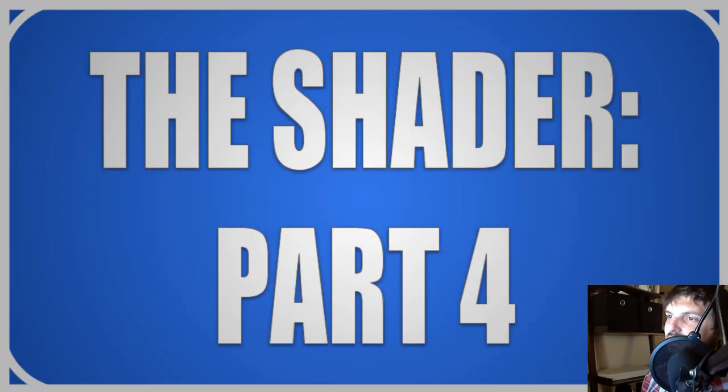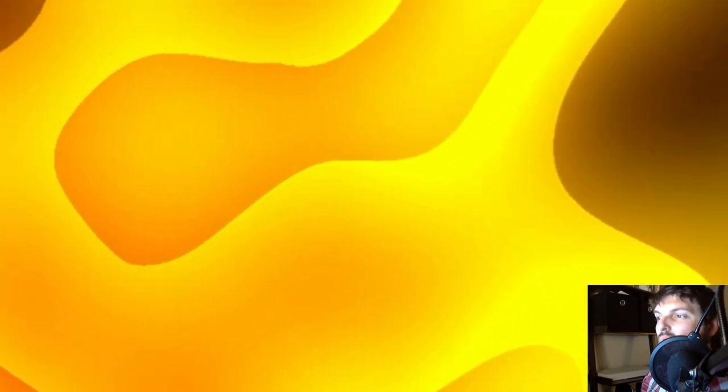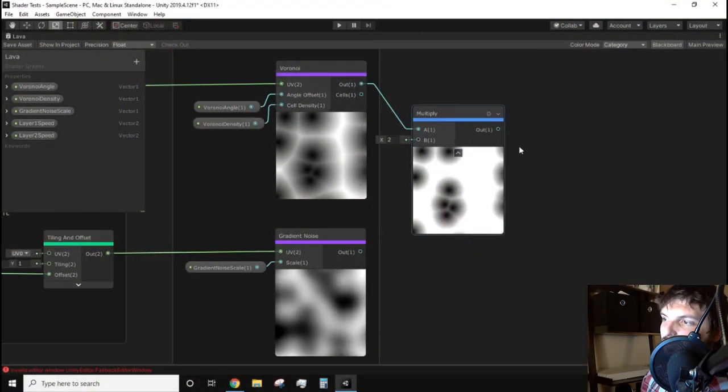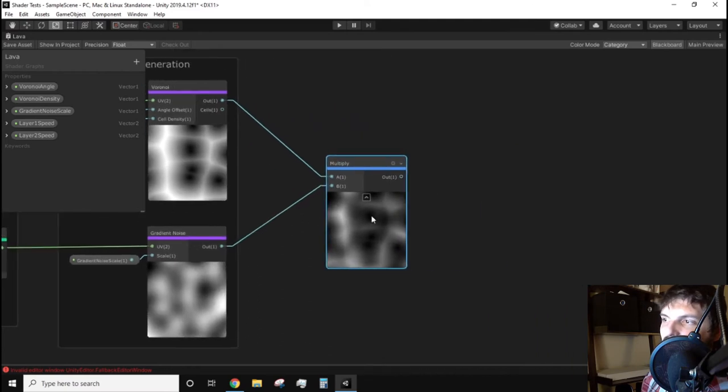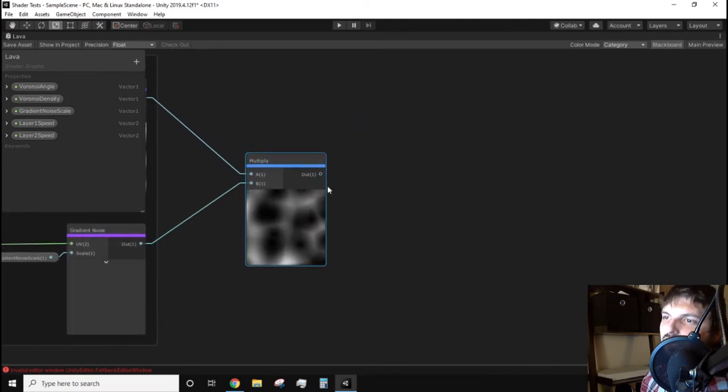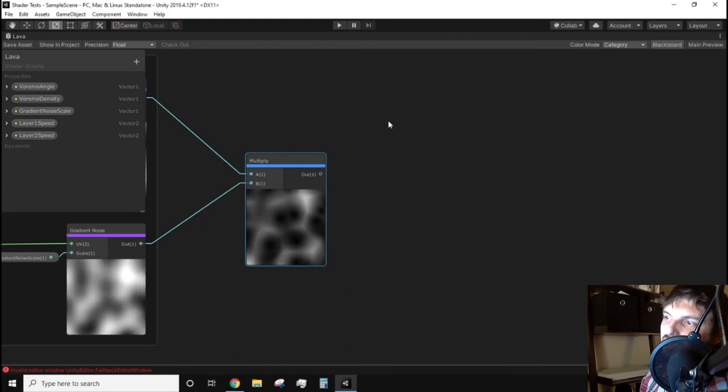There are a few options here to get a nice looking result but the particular route I want to take is creating an outline feature that uses the emissions to give that cool glowy effect. So let's multiply the outputs of both noises together. This blends the noise nodes together giving us a cool scrolling effect. Using the output of this multiply we can create the outline effect I spoke of earlier.